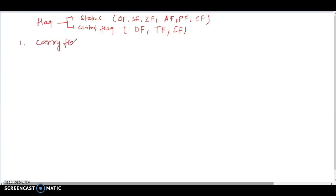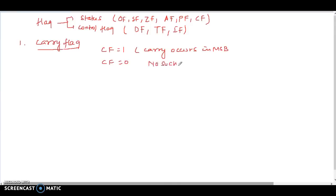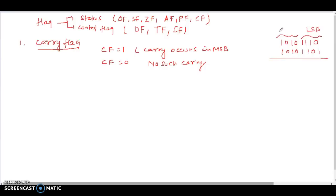First, we will discuss the carry flag. CF is equal to 1 when a carry occurs in the MSB, the most significant bit. CF is equal to 0 if no such carry occurs. For example, if you are adding an 8-bit number, the leftmost bit is the MSB. If a carry occurs at the MSB position, then the carry flag is set to 1; otherwise 0.